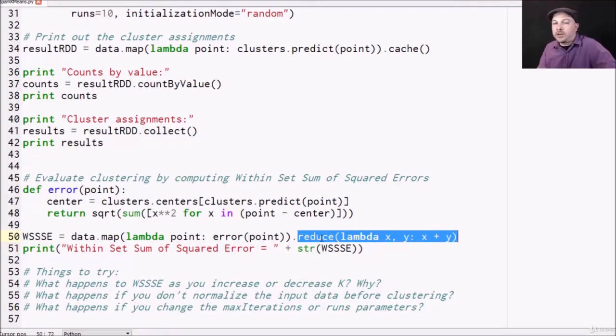So reduce will take the entire RDD two things at a time and combine them together using whatever function you provide. So the function I'm providing here is take the two rows that I'm combining together and just add them up. And if we do that throughout every entry of the RDD, we end up with the final summed up total.